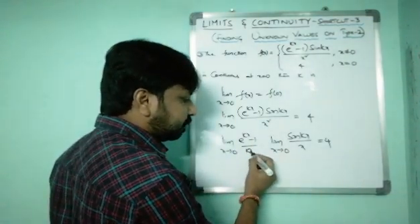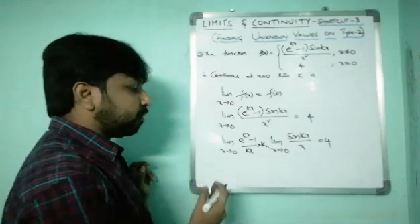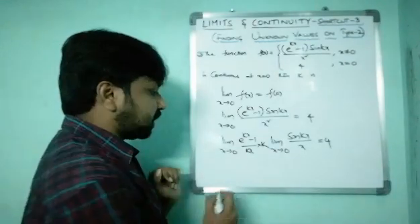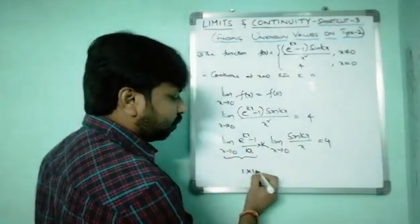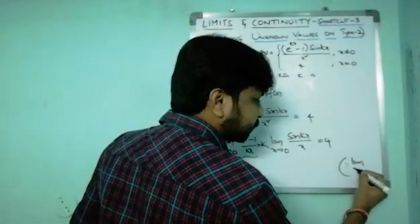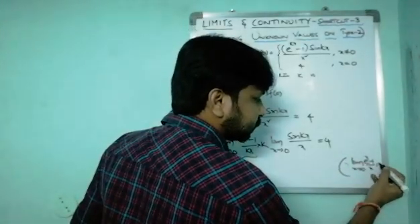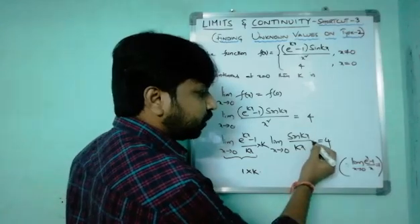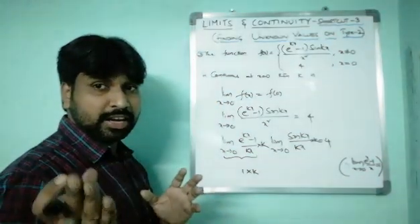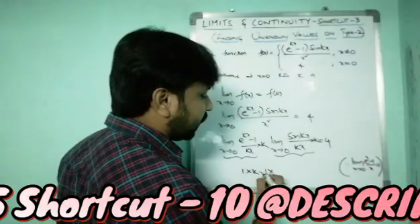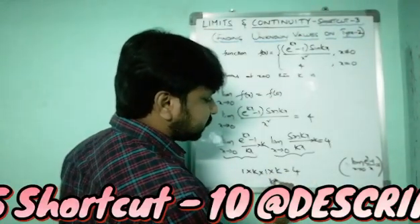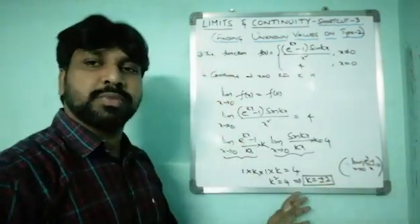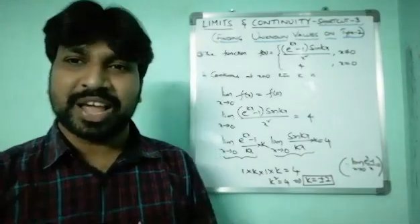Multiply and divide by k in each factor. Using standard results: limit x→0 of (e^x − 1)/x = 1, and limit x→0 of sin(kx)/(kx) = 1 (shortcut number 10). So the expression becomes 1·k · 1·k = k² = 4. Therefore k = ±2.